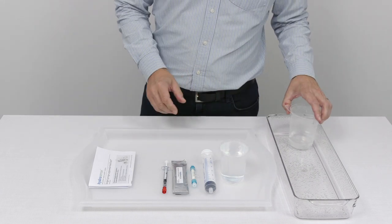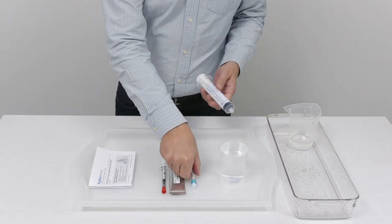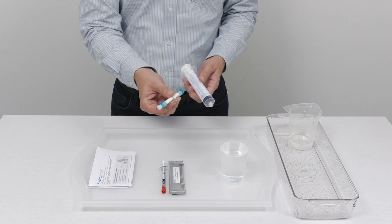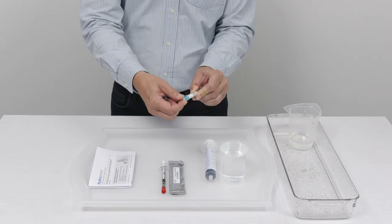Once we've collected this water sample what we need to do then is draw up the sample into this 60 ml syringe and then we will pass that liquid through this hollow fibre filter. Prior to using the filter we just tighten the end cap to make sure that's securely on the filter.